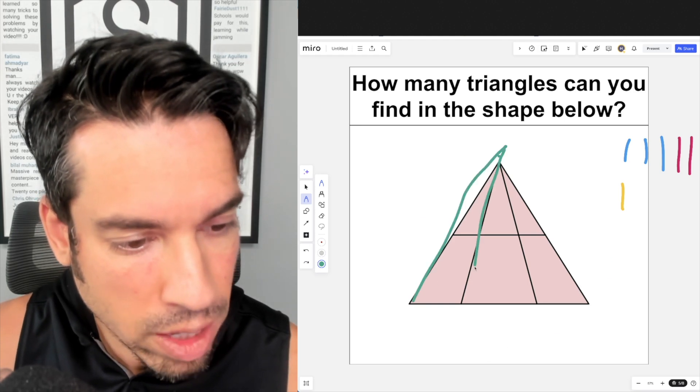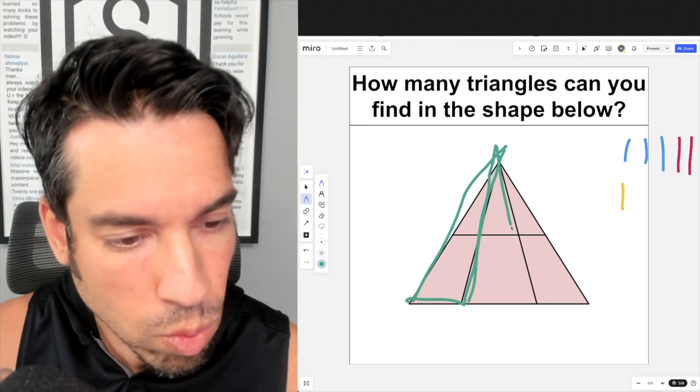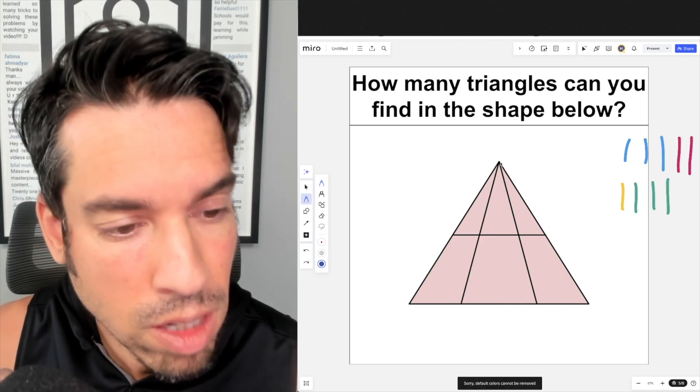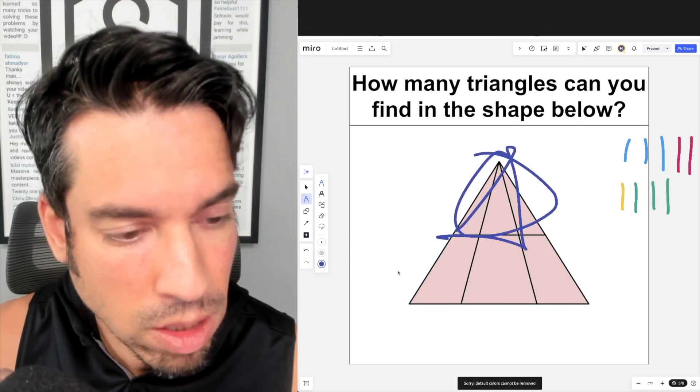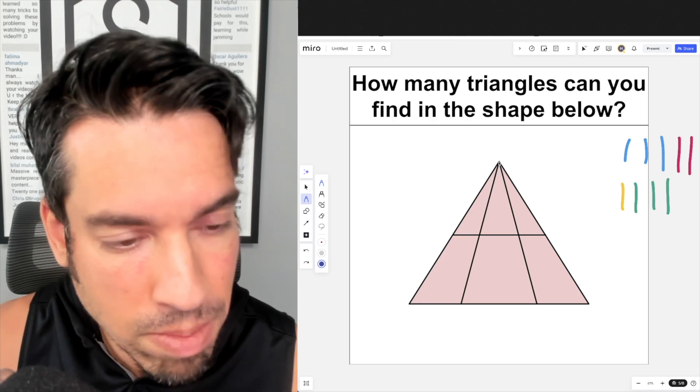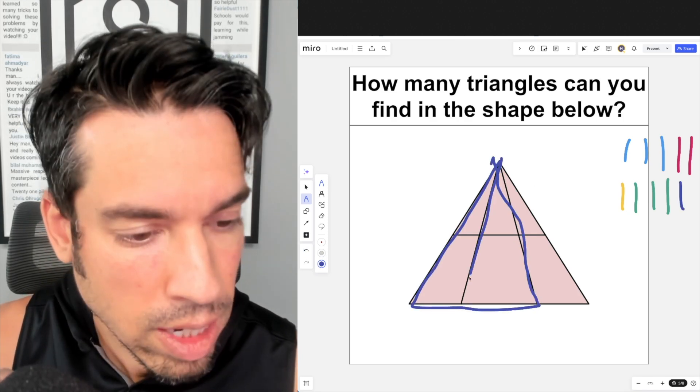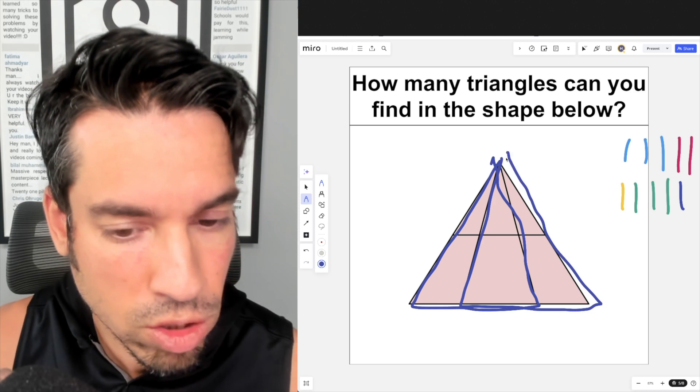We're going to expand to this one as one, and this one right here as two. Last but not least, we have the big dog—the entire triangle—for our final one. And now as we count these up, we have one, two, three, four, five, six, seven, eight, nine, ten, eleven, twelve.